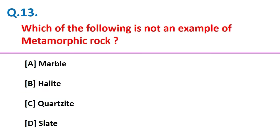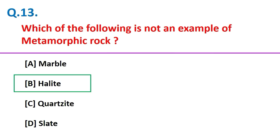Which of the following is not an example of metamorphic rock? Halite. Friends, halite is a sedimentary rock, but marble, quartzite, and slate are metamorphic rocks.